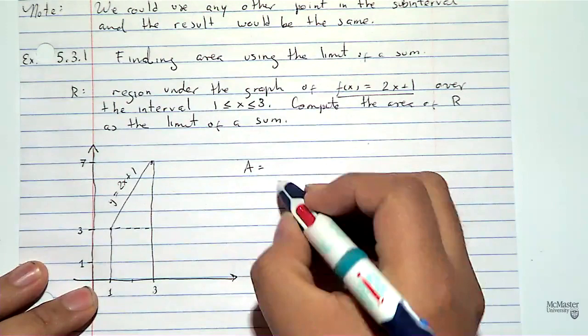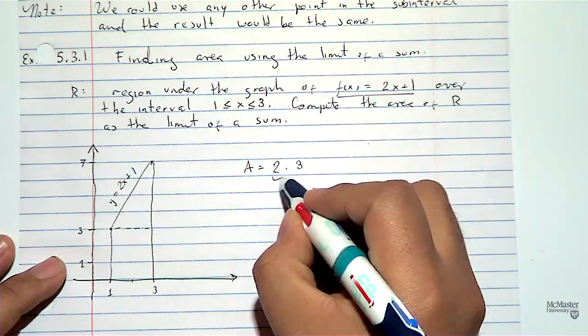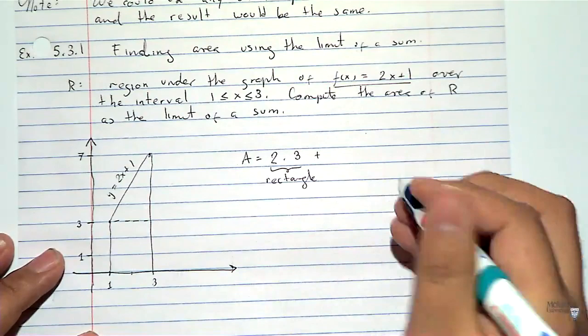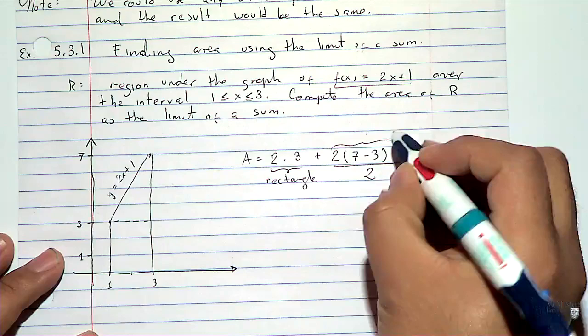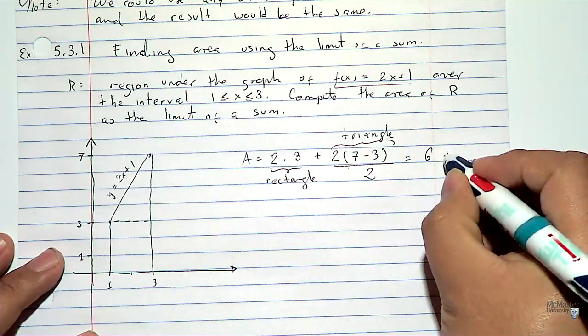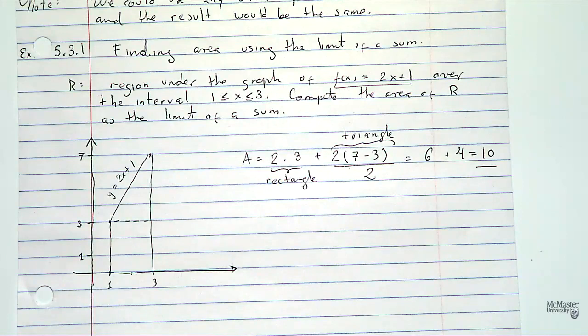The area is the rectangle (base 2, height 3) plus the triangle (base 2, height 7−3=4, divided by 2), giving 6 + 4 = 10. This is the high school approach. Now the point is to show that if we compute it by means of an integral, we will get the same result — that is the moral of the story, to verify that the method works.